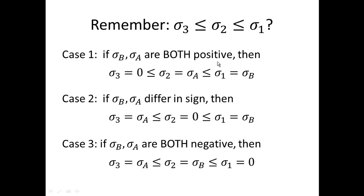So if sigma b and sigma a are both positive, then you know that sigma 3 is going to be the zero, and sigma 2 is going to be the a, and sigma 1 is going to be the b. That's case 1.